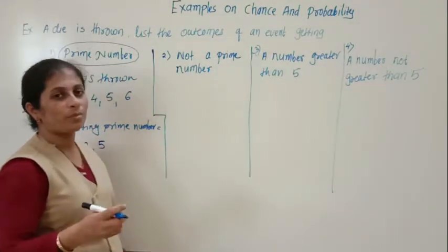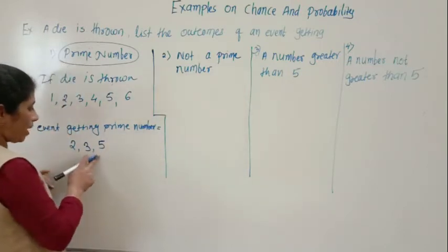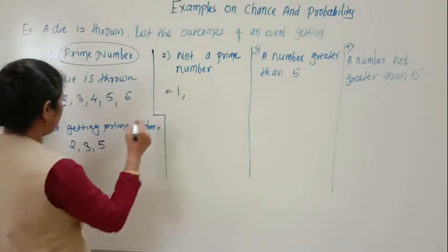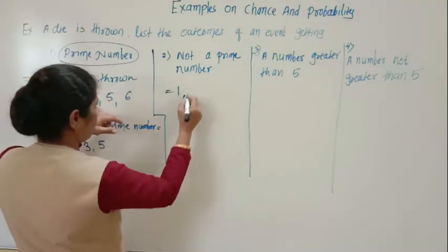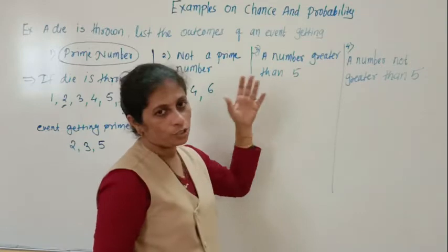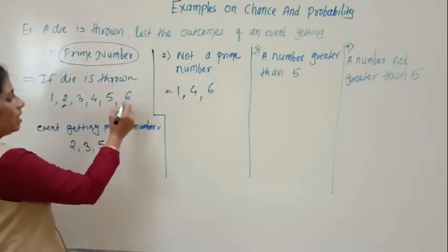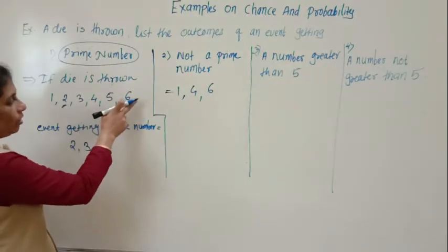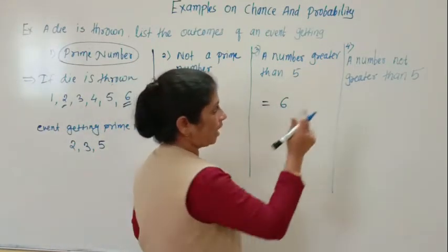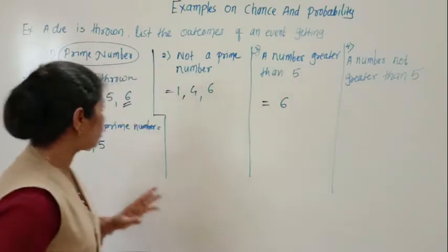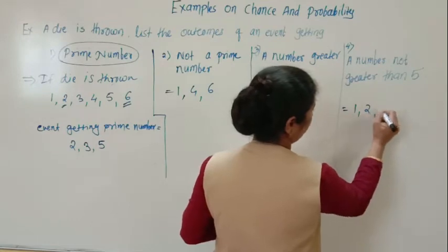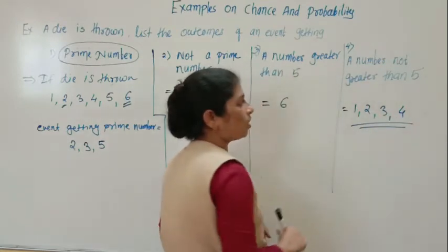Not a prime number means other than prime numbers — so 1, 4, and 6. Next, a number greater than 5: the number 6 is greater than 5, so it is only 6. A number not greater than 5 means all numbers less than or equal to 5, so we write 1, 2, 3, and 4. These are the numbers which are not greater than 5.